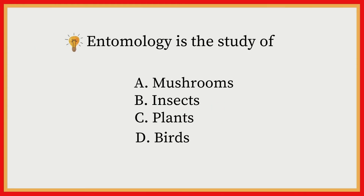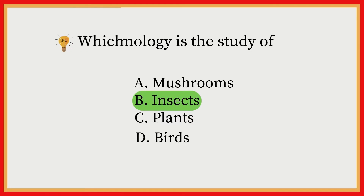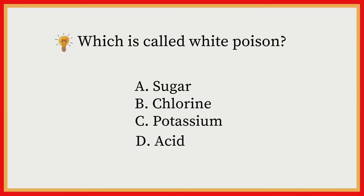Entomology is the study of: A) Mushrooms, B) Insects, C) Plants, D) Birds. Answer: B, Insects. Which is called white poison? A) Sugar, B) Chlorine, C) Potassium, D) Acid. Answer: A, Sugar.